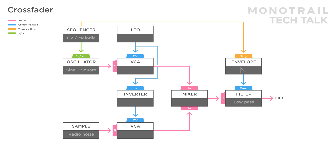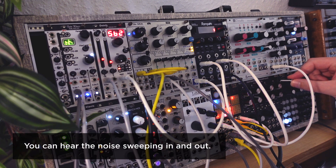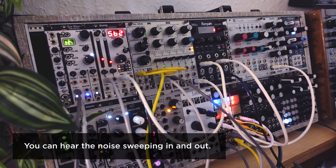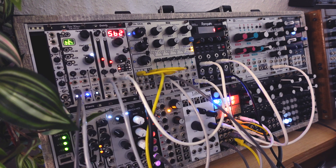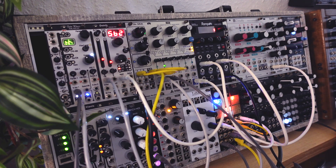Remember, you can use the offset and CV attenuators on the VCA to dial in the exact balance you like. The ratio between the signals doesn't have to be equal. You can use the same trick with two oscillators, or two different wave shapes from a single oscillator.